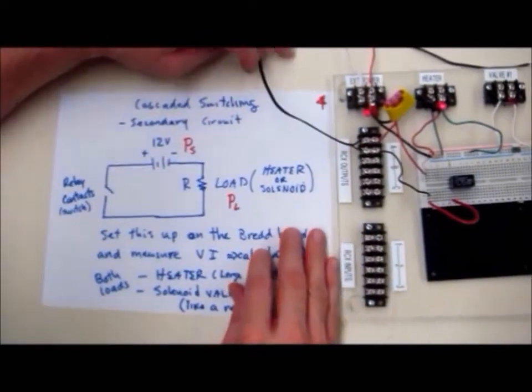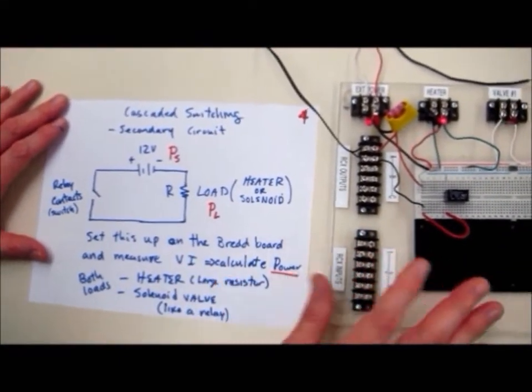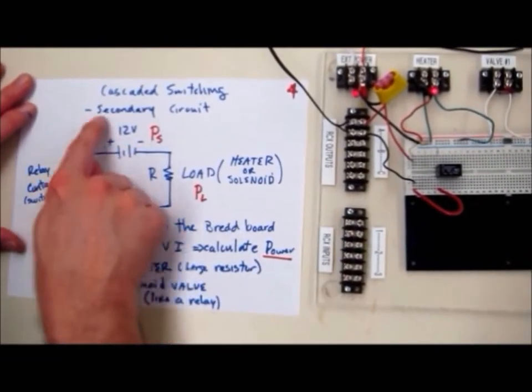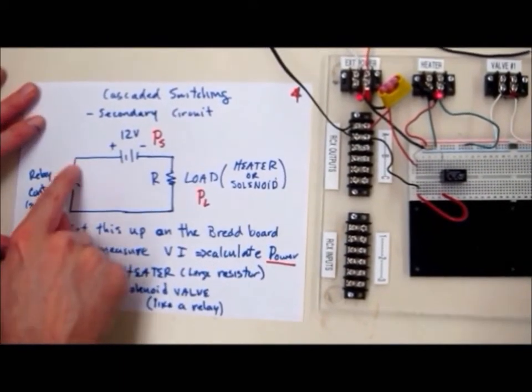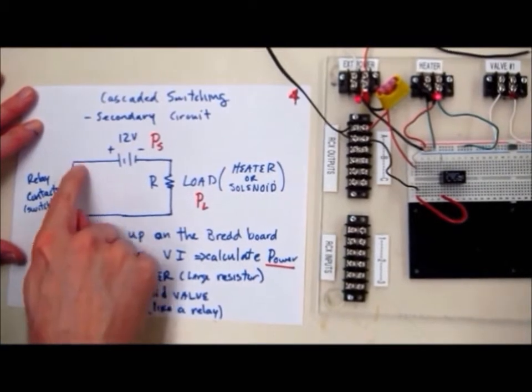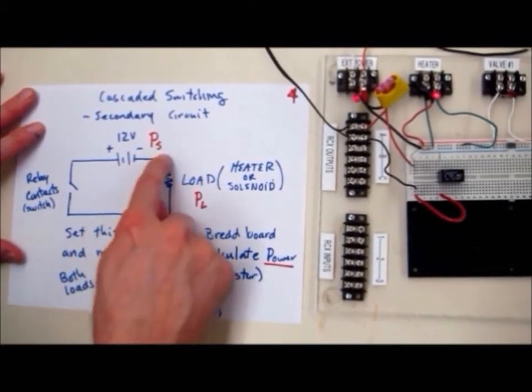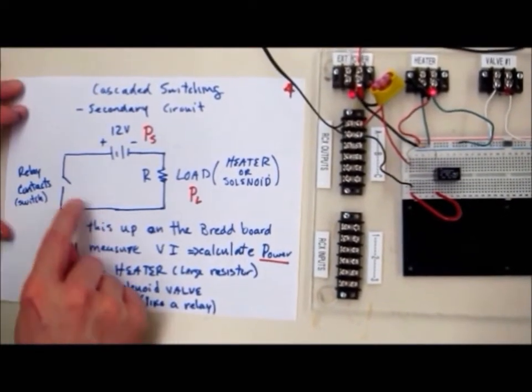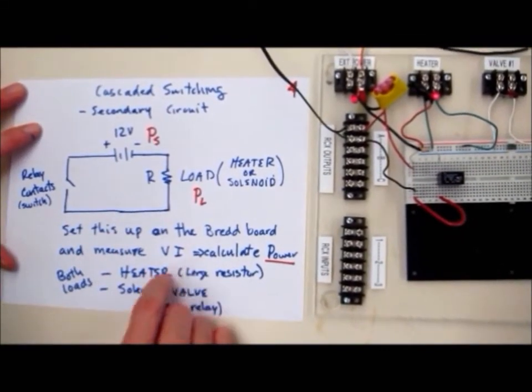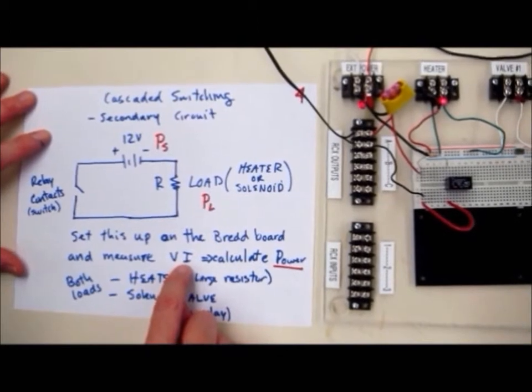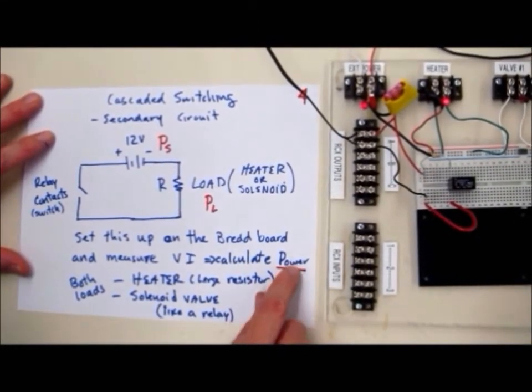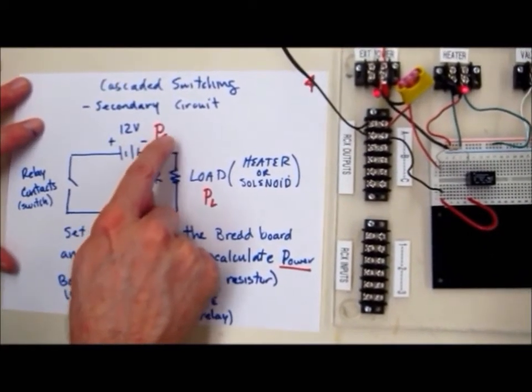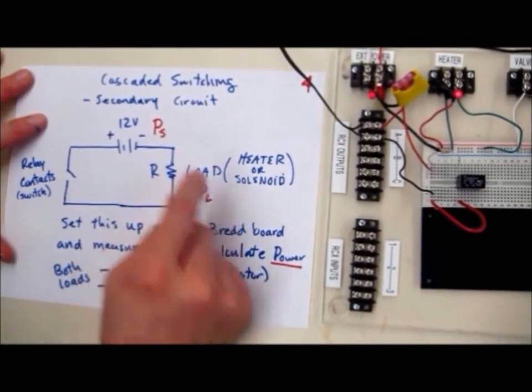So back to the cascaded switching. We finished the primary side, and you'll take power and current measurements on the relay and the resistors. On the cascaded switching side, the secondary side, the relay contacts we just put together, and we could hear them opening and closing. Now we'll connect a power supply and the resistive loads, and with that, close that circuit. We'll be able to use the RCX to power this circuit. We're going to set this up on the breadboard, and then you're going to have to measure the voltage and current through this part of the system and then calculate the power. Our concern here is, do these loads ask for too much power from the power supply?